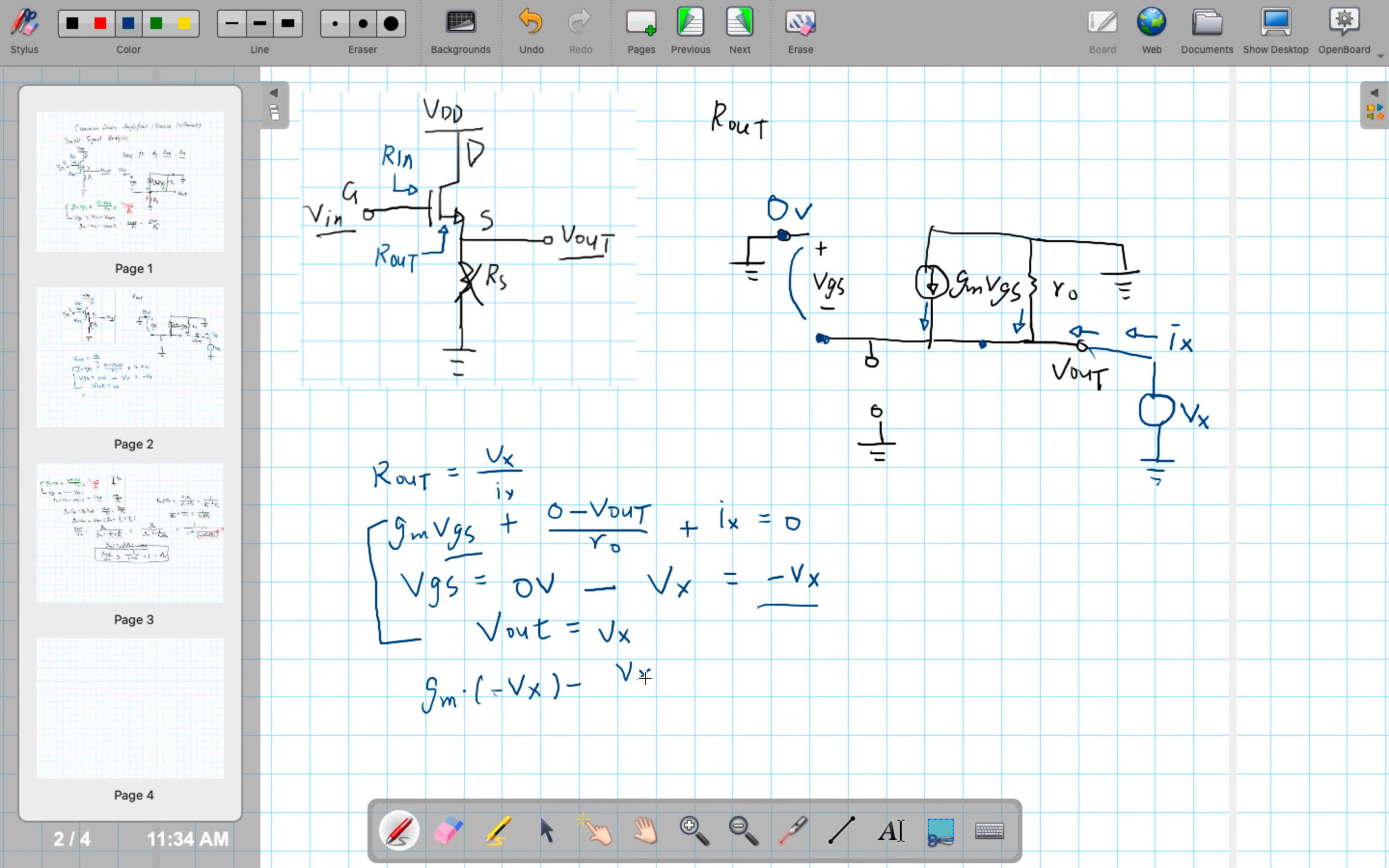Gm times substitute Vgs with minus Vx that we just found. Minus Vx over R0 plus IX equals to 0. Ix equals to Vx times 1 over R0 plus Gm. So, moving to the right, rout equals vx over ix equals to 1 over gm plus 1 over r0.